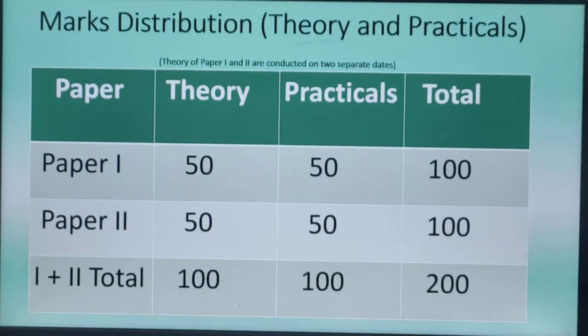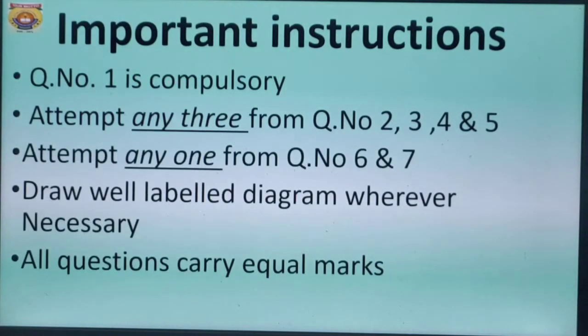Children, marks distribution of theory and practicals are in front of you. Theory of paper 1 and paper 2 are conducted on two separate dates, meaning your paper 1 will be one day and paper 2 will be on a second day. Both papers will not be on the same day. Paper 1 consists of 50 marks theory and 50 marks practicals, totaling 100 marks. Paper 2 has the same pattern: 50 marks theory, 50 marks practical, total 100 marks. If we combine paper 1 and paper 2, total theory marks are 100, total practical marks are 100, and including theory and practical, the total marks are 200. These 200 marks are very important for you.